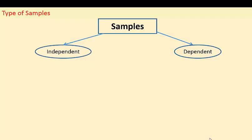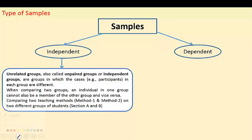Independent samples are also known as unrelated groups — when two groups are unrelated. For example, if you want to compare two teaching methods on two different groups of students, your sample will contain students from section A and section B. One sample will be from section A and the other from section B. Since students in both sections are not the same, this is considered an independent sample.